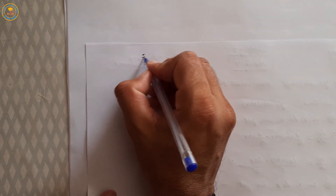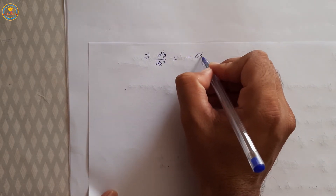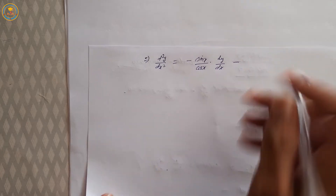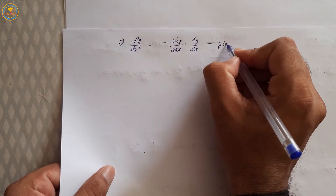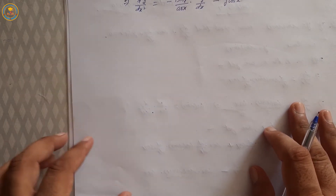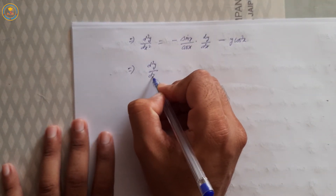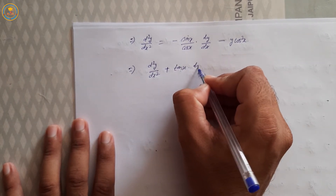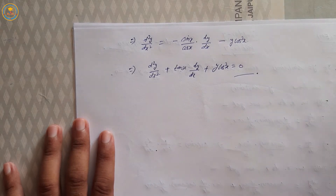This implies d²y/dx² = −(sin x/cos x) · dy/dx − cos²x · sin(sin x). Since sin(sin x) = y, it means y · cos²x. Therefore d²y/dx² + (sin x/cos x) · dy/dx + y · cos²x = 0, i.e., d²y/dx² + tan x · dy/dx + y · cos²x = 0. Hence proved.